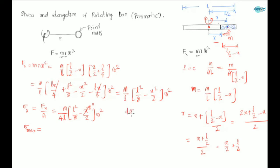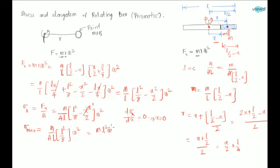By substituting x = 0 in σx, we get the maximum stress σ_max = (M/Al)·(l²/8)·ω² = Ml²ω²/(8Al). Since density ρ = M/(A·l), we can write σ_max = ρl²ω²/8. This is the maximum value of stress.